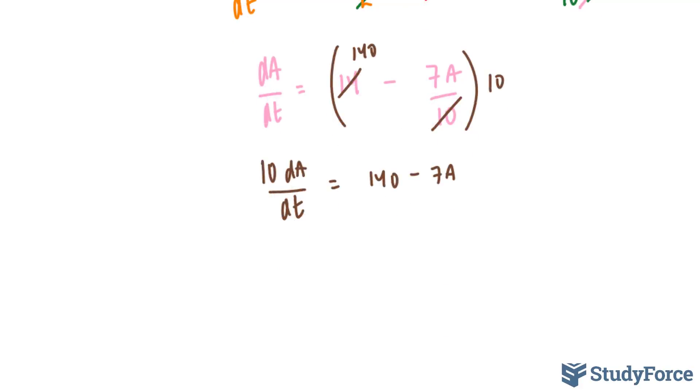Next, what I'll do is reciprocate both sides. Now pretend that this expression has a 1 underneath. If I reciprocate both sides, I end up with dt at the top, 10 times dA at the bottom. And that's equal to 1 over 140 minus 7A.